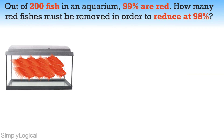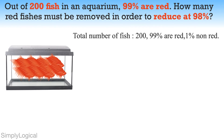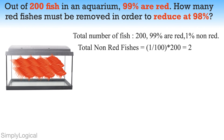Let me explain the solution now. Initially, we know that the total number of fish given is 200 and 99% are red, with 1% non-red. Since only red fish must be removed, indirectly the question says that the number of non-red fish must be constant. As per the question, initially 1% of fish are non-red.